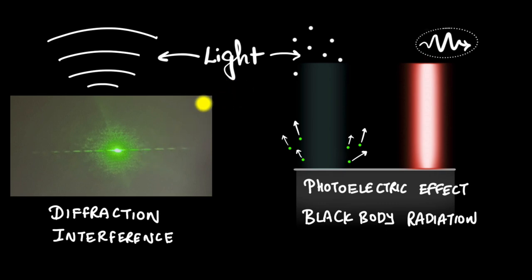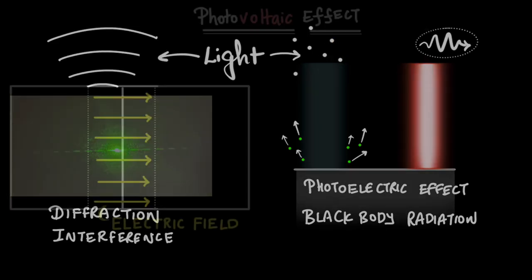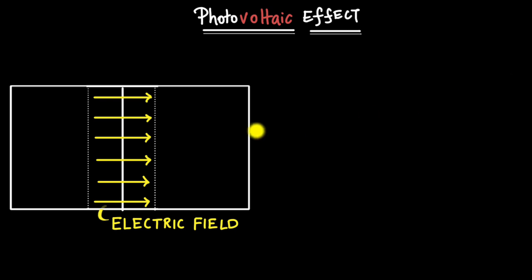There are many applications of light being a quantum object. In the photoelectric effect, light ejects electrons. There is a very similar, slightly different effect in which shining light can generate voltage — we call this the photovoltaic effect.